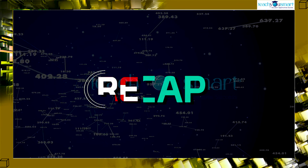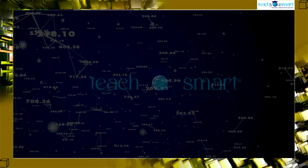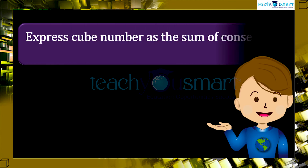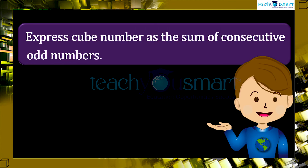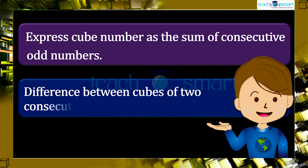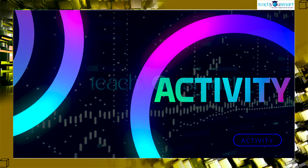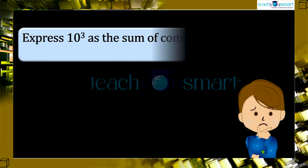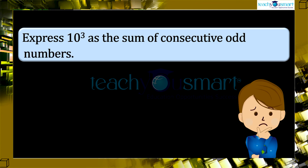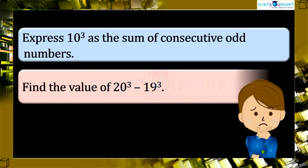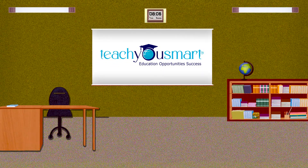Let's quickly recap how to express a cube number as the sum of consecutive odd numbers, and how to find the difference between cubes of two consecutive natural numbers. Before winding up, let's go to an activity. Express 10 cube as the sum of consecutive odd numbers, and find the value of 20 cube minus 19 cube. That's all for now. See you all in the next class.